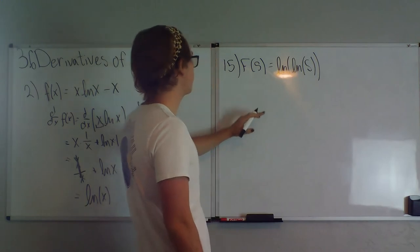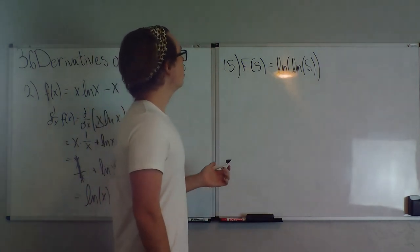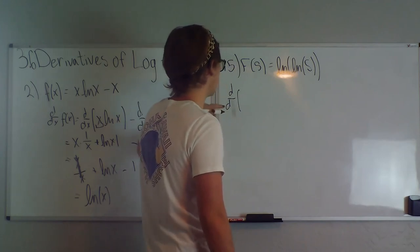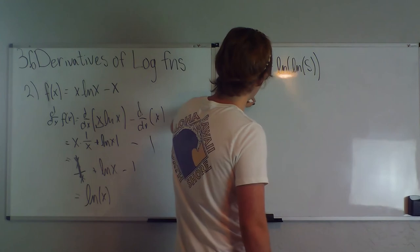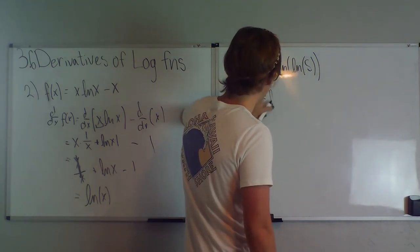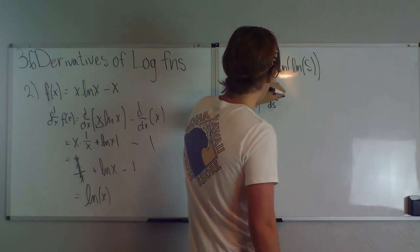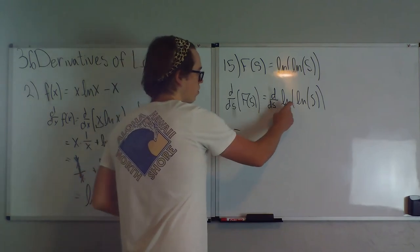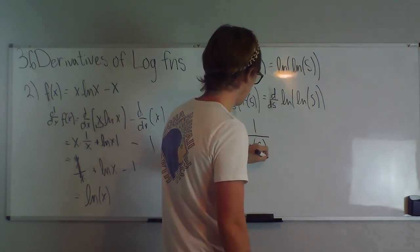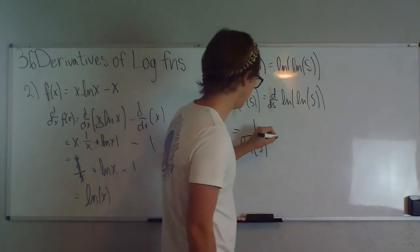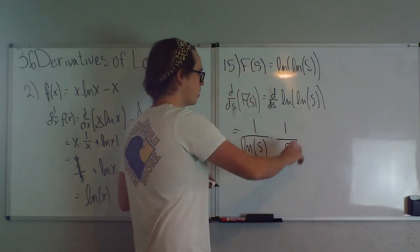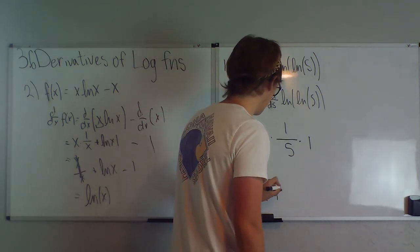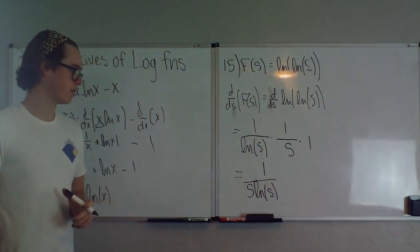Problem 15: f(s) equals ln(ln(s)). Differentiating with respect to s using the chain rule: 1 over ln(s) times the derivative of ln(s), which is 1 over s. So f prime(s) equals 1 over (s times ln(s)).